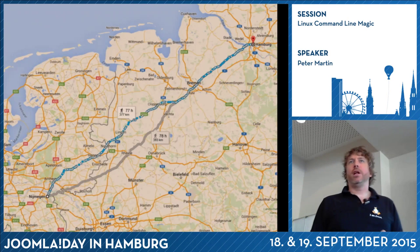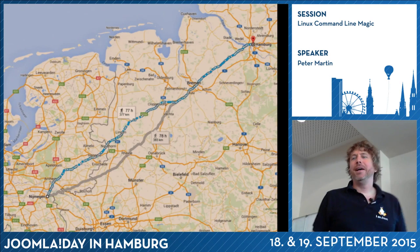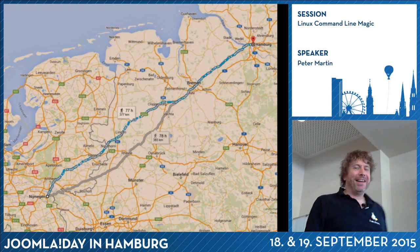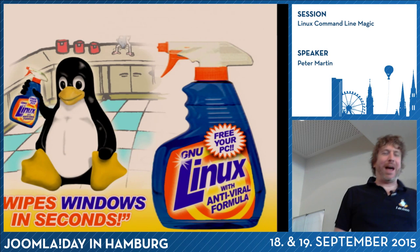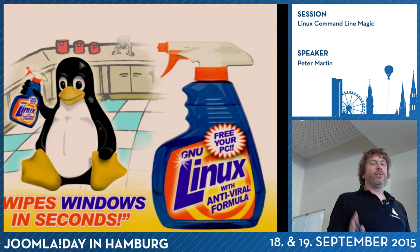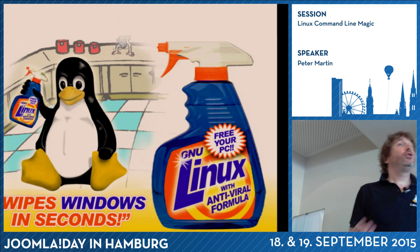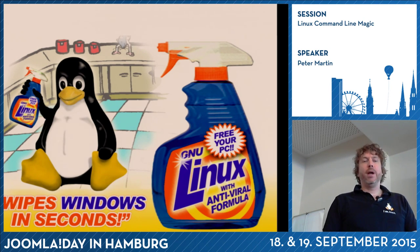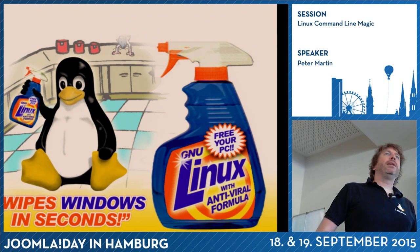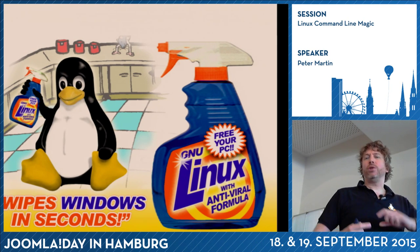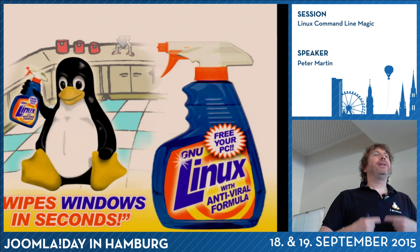I'm Peter Martin. I live in Nijmegen — it's in the Netherlands, pretty far away. I'm not really fond of Windows; I really love Linux. If you use Windows, I don't mind — it's just a tool, just like Linux or Mac. But in 2007, I switched to Ubuntu and then to Debian.